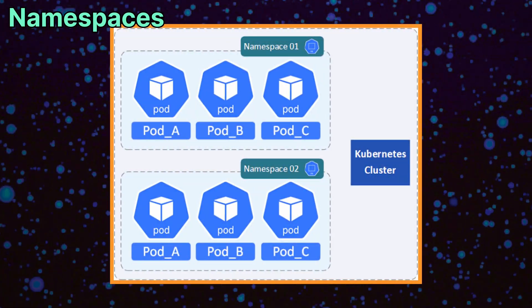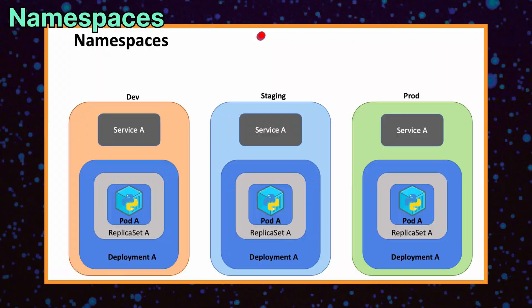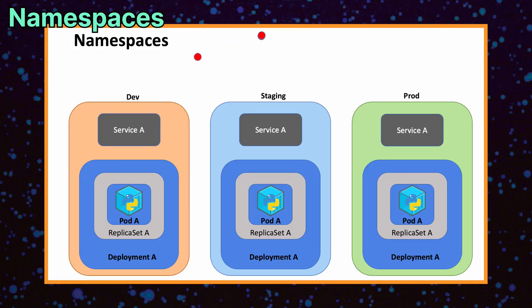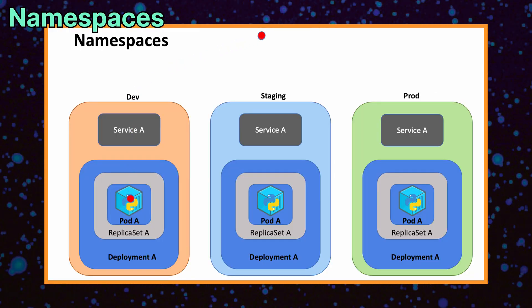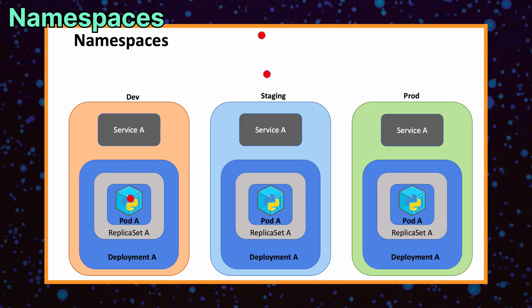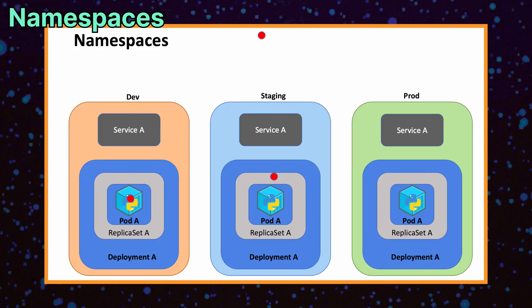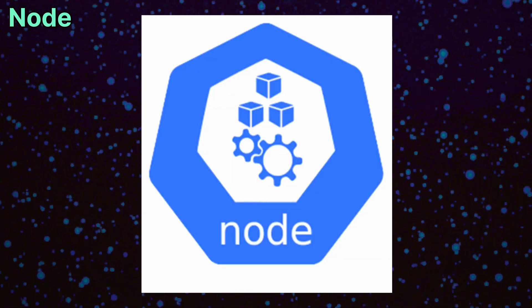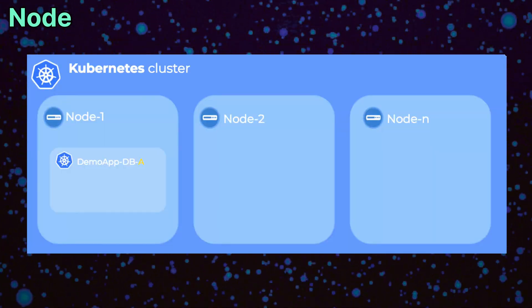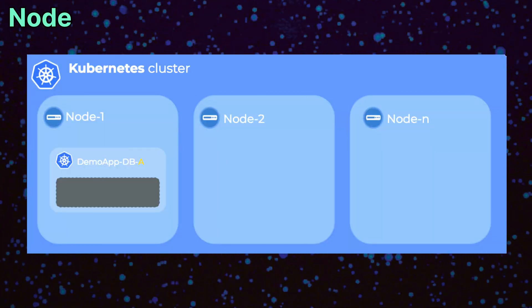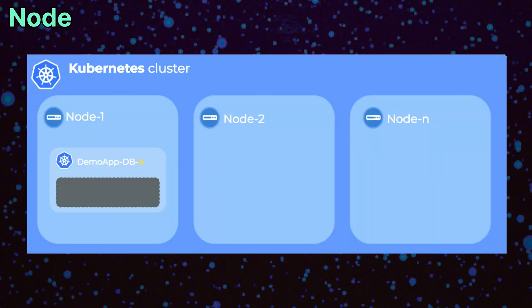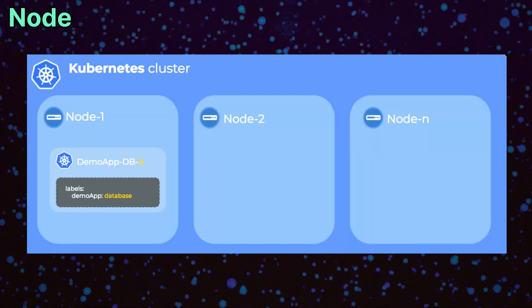At the cluster level, namespaces provide logical separation, allowing multiple teams or applications to share a cluster safely. Nodes are the physical or virtual machines that actually run the pods.